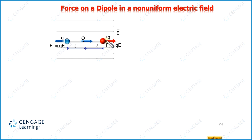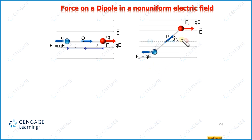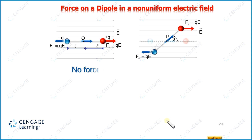This means the dipole is in translational equilibrium. Also, the net torque acting on the dipole in this condition is zero, meaning it is also in rotational equilibrium. Now if we rotate the dipole by angle theta with respect to the electric field lines, both charges still experience equal and opposite forces, so net force is still zero. However, net torque is not zero — the dipole is in translational equilibrium but not rotational equilibrium. In both scenarios, no net force acts on the dipole. We can conclude: no force is experienced by a dipole in a uniform electric field.